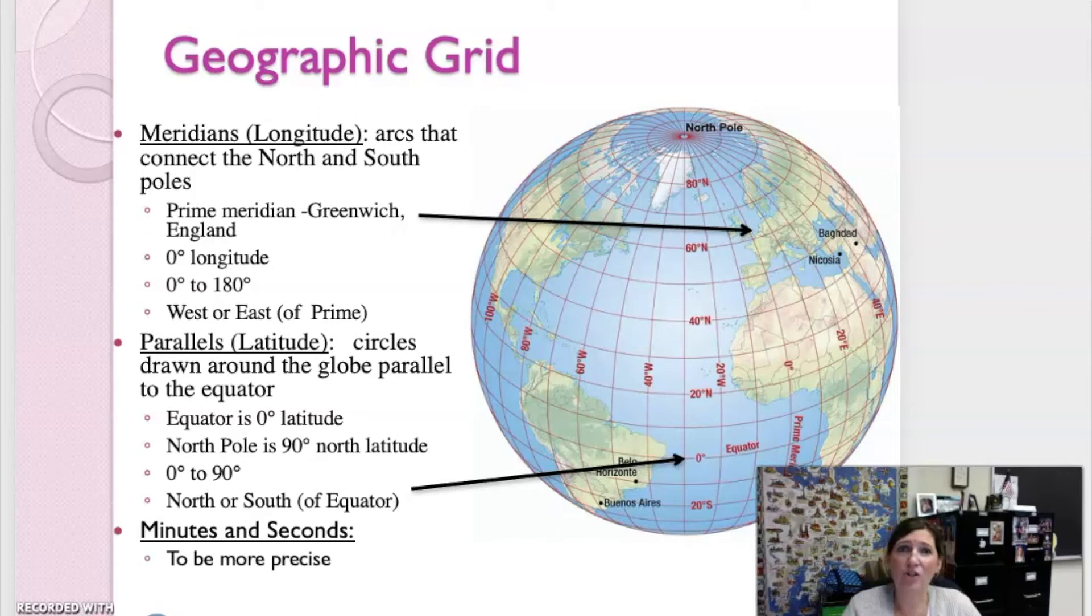Now the lines of latitude are circles or parallels drawn around the globe. They all run parallel to the equator. So as I pointed out earlier, I always look at the equator as the beginning of the latitude. That would be zero degrees latitude. The north pole is 90 degrees north latitude, and the south pole is 90 degrees south latitude. So the equator here is zero as we go 90 to the north and 90 to the south. To be even more specific, we can break these degrees into minutes and seconds.